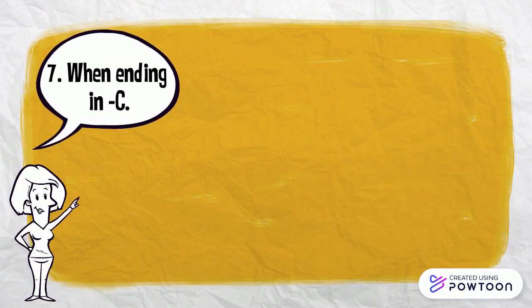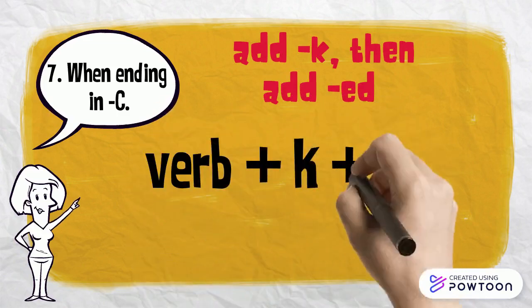When a verb ends in C, first we add K, and then we add ED at the end.